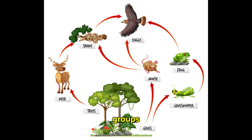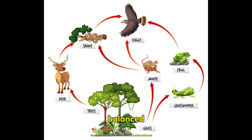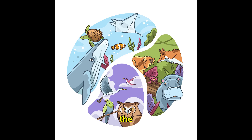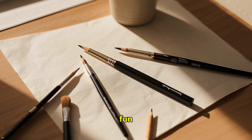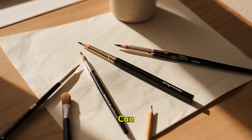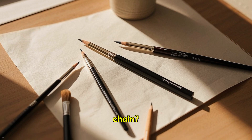Each of these groups of animals plays an important role in the food chain. Together, they keep our ecosystem healthy and balanced. So the next time you see an animal, remember that it is part of the food chain and that its role is important for keeping our planet alive. Now it's time for some fun — can you draw your own food chain?